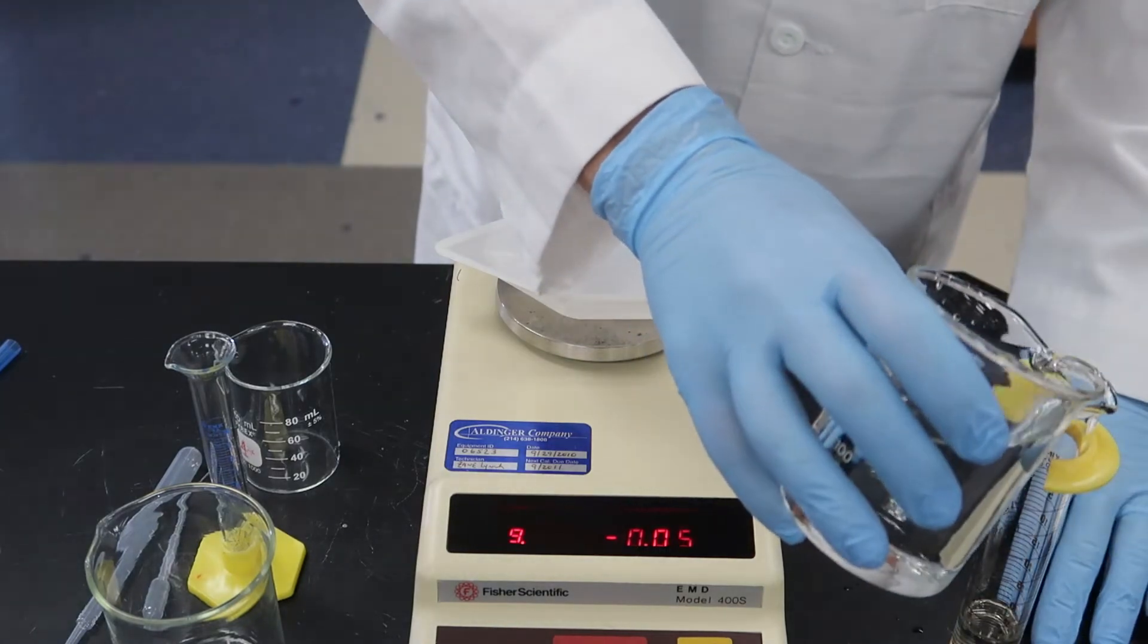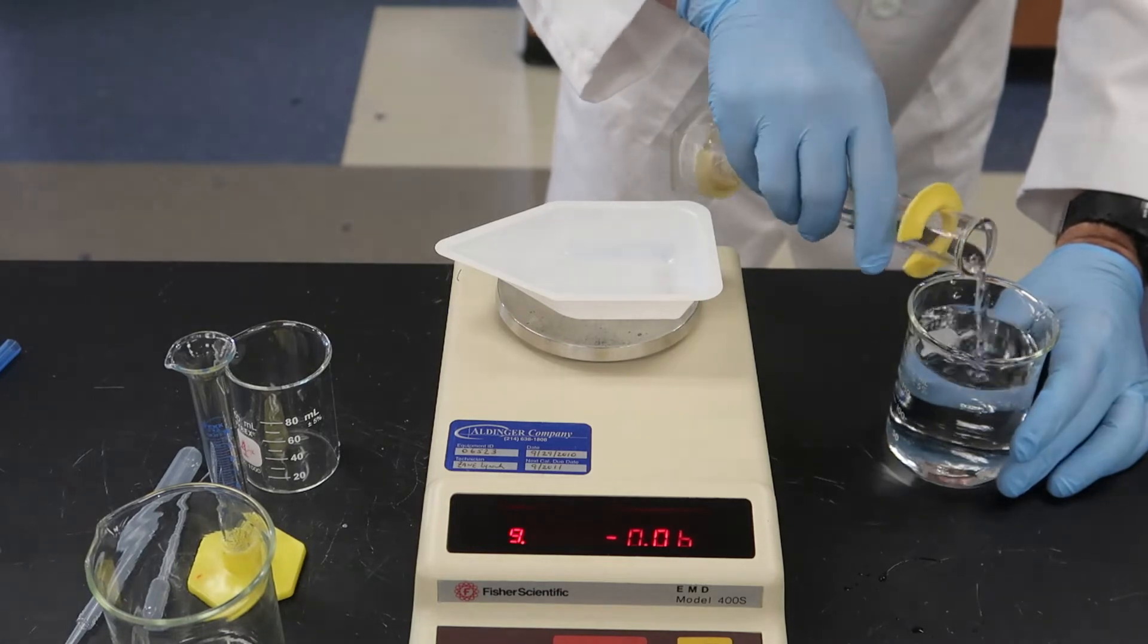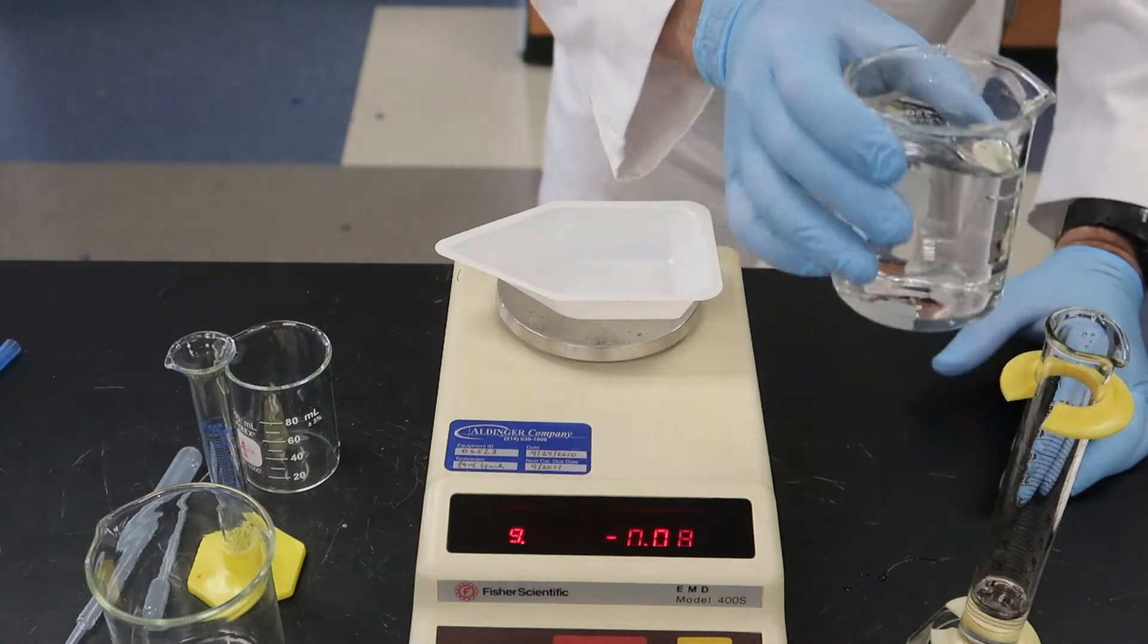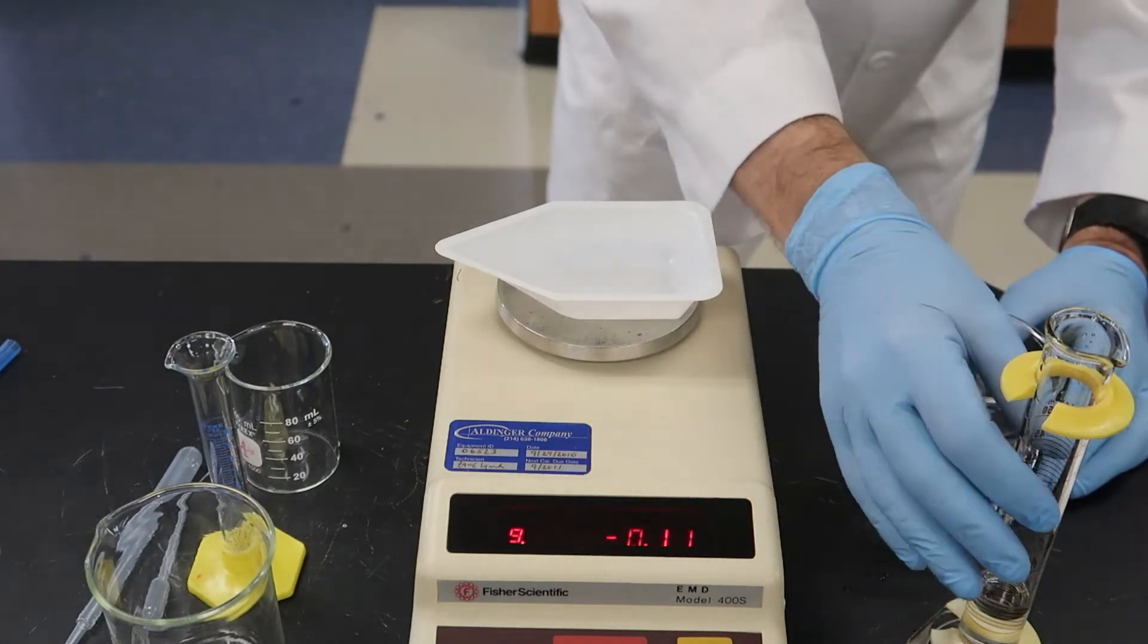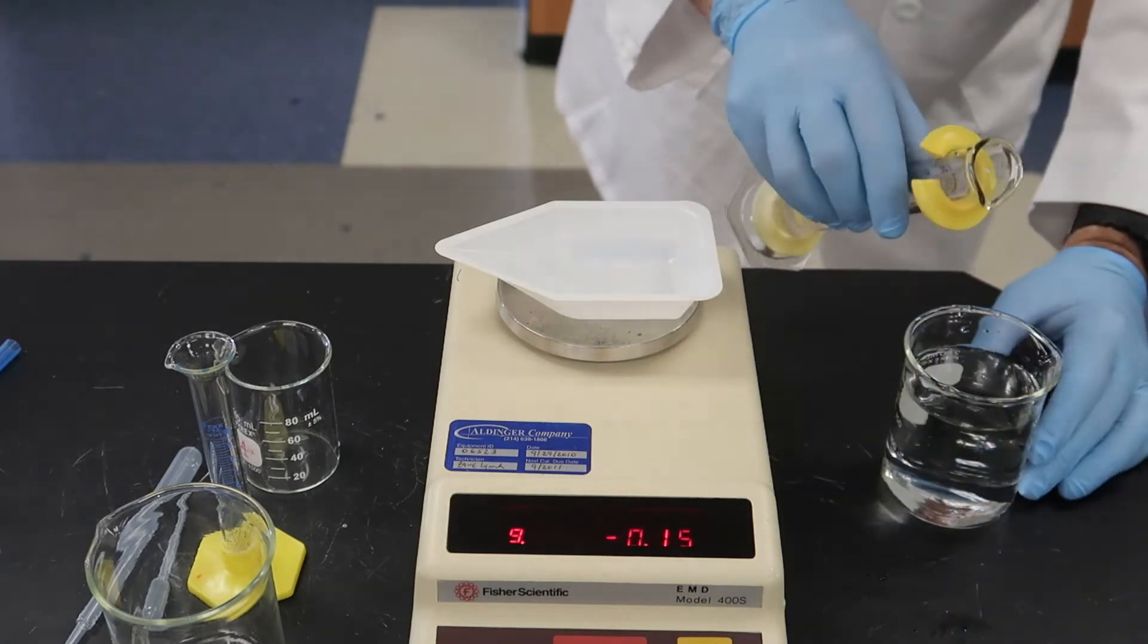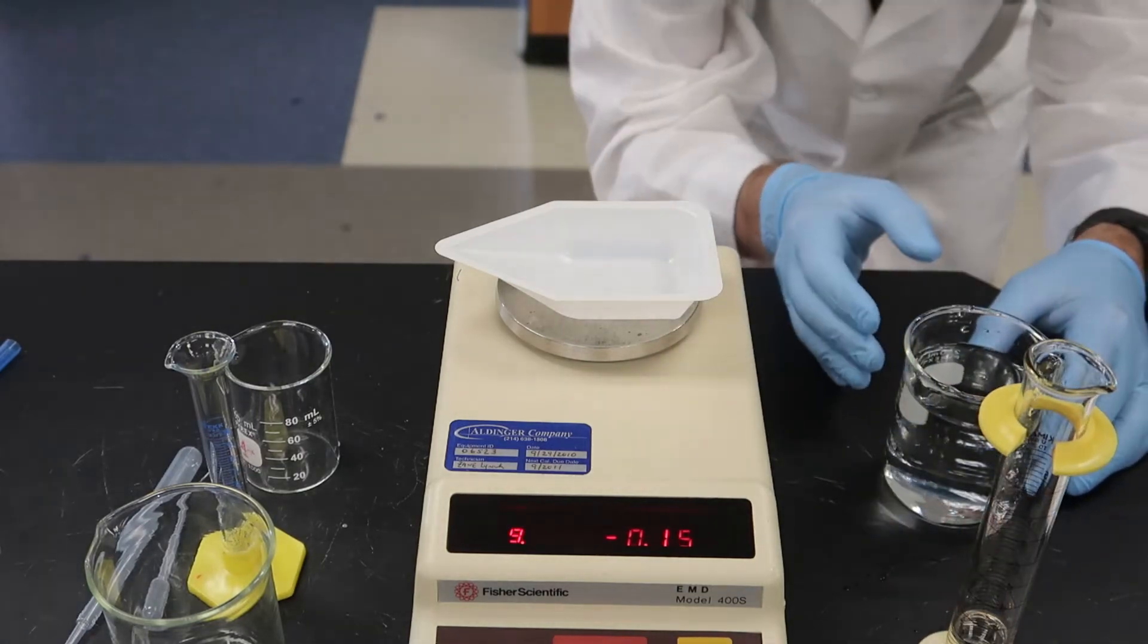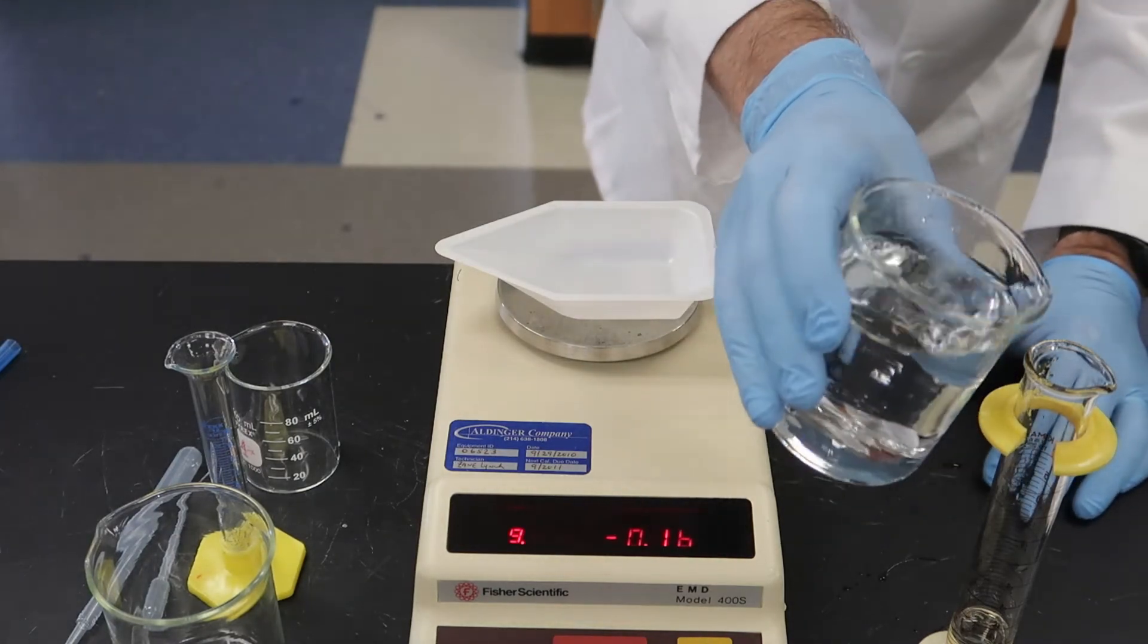And we'll see how accurate our volumes are by measuring the mass. Hopefully you already know that one milliliter should be one gram of mass if we're dealing with just regular water.